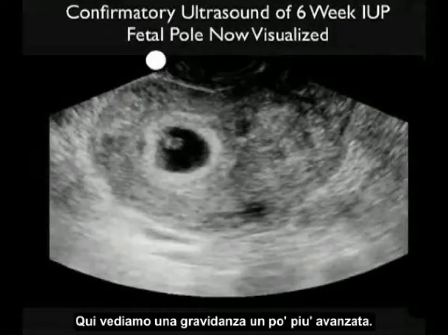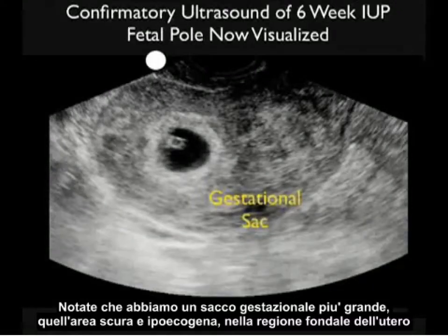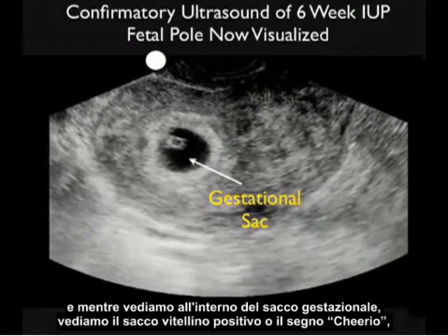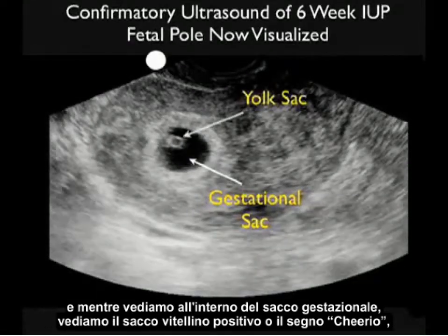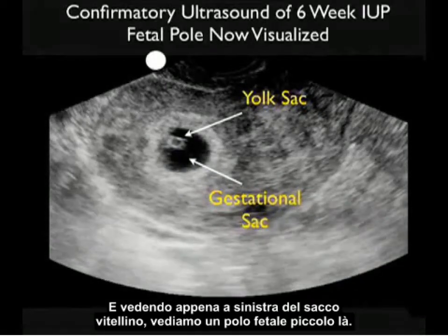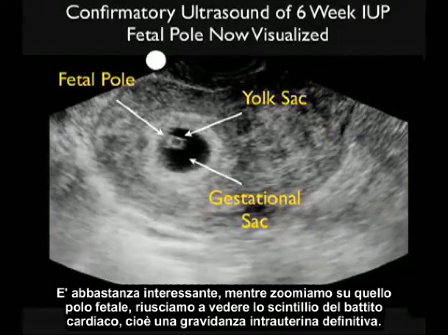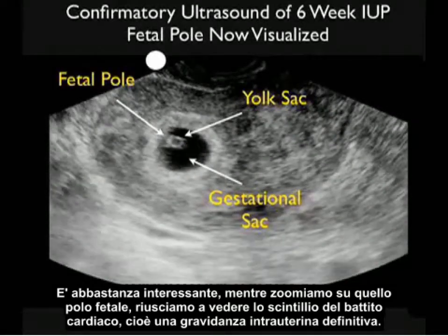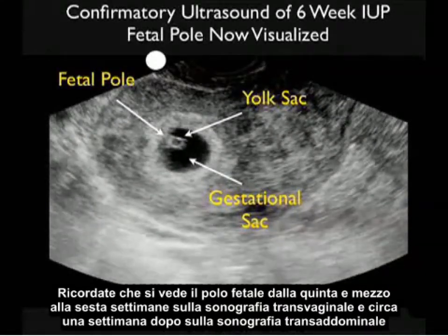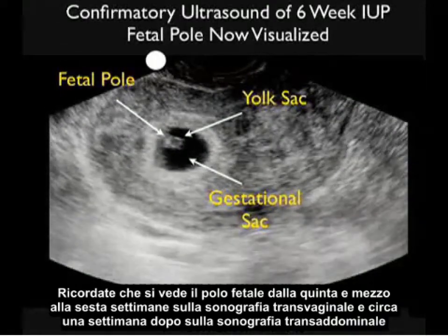Here we see a pregnancy that is a bit further advanced, with a larger gestational sac — the darker hypoechoic area within the fundal region of the uterus. Inside the gestational sac we see the positive yolk sac or cheerio, and just to the left of the yolk sac, a tiny fetal pole. Zooming in on the fetal pole, we can make out the flicker of a heartbeat — a definitive intrauterine pregnancy. The fetal pole is seen at about 5.5 to 6 weeks on transvaginal sonography and about a week later on transabdominal sonography.